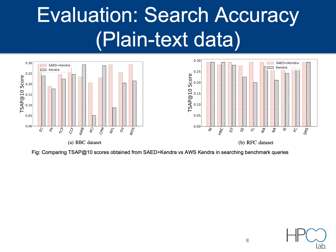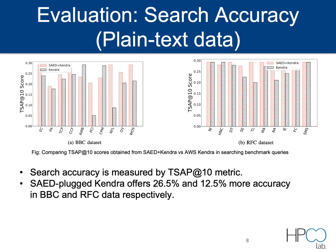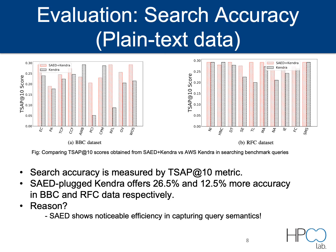Let's talk about the evaluation of search accuracy of our SAED plus Kendra system versus original Kendra. Search accuracy is measured based on the NDCG@10 metric. We observe that SAED plus Kendra offers 26.5% more accuracy on the BBC dataset and 12.5% more accuracy improvement on the RFC dataset. More exact queries are found in the RFC dataset than BBC, which is why the improvement there is smaller. In the BBC dataset, search queries are not mostly found verbatim in the data, so SAED shows noticeable efficiency in capturing query semantics.